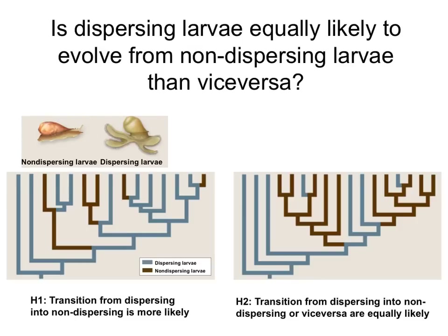These are a group of mollusks that form a larva that can swim, and some that form no larva that allows them to swim. So if evolving a dispersing larvae is just as likely as having a non-dispersing larvae, you would have a tree that looks something like this, where going from non-dispersing into dispersing, which is in blue, is just as likely as going from the blue into brown. So any of these transitions will be equally as likely.